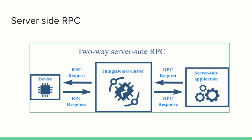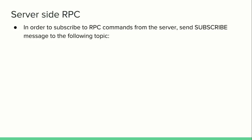In the case of two-way server-side RPC, ThingsBoard will send an RPC request to the device, and in response the device will send an RPC response. In server-side RPC, the ThingsBoard IoT platform is the originator, so ThingsBoard will send an RPC request to the device, and in response the device will send the RPC response back to ThingsBoard.